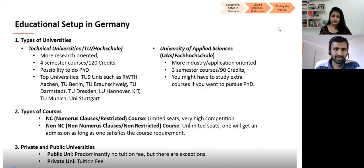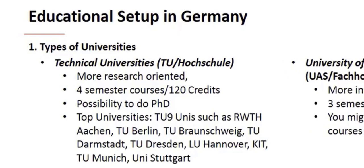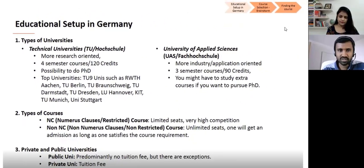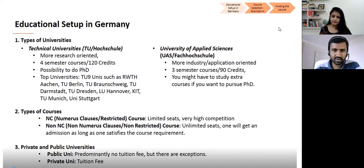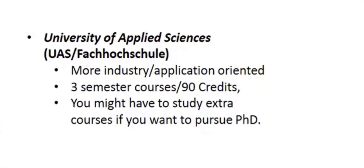I have prepared a slide on the educational setup in Germany. There are basically two types of universities: Technical Universities and Universities of Applied Sciences. Technical Universities, also called Universität, are more research-oriented and have a four-semester course, with most offering 120 credits. Whereas UAS, also called Fachhochschule, is more industry or application-oriented, and they usually consist of three semesters with 90 credits.